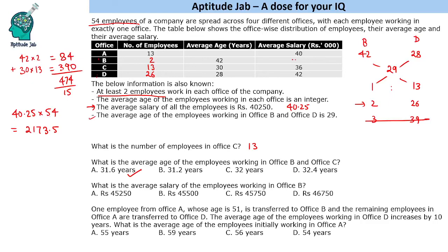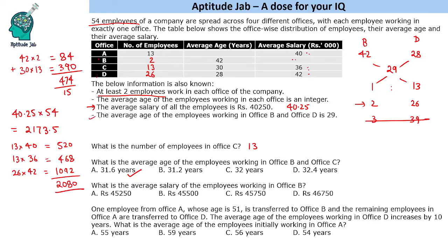We find the totals for each of the other offices and subtract. 13 × 40 = 520; 13 × 36 = 468; 26 × 42 = 1092. These sum to 2080. Subtracting from 2173.5 gives 93.5 thousand for office B. Dividing by 2 employees gives 46.75 thousand, so the average salary of office B is 46,750.